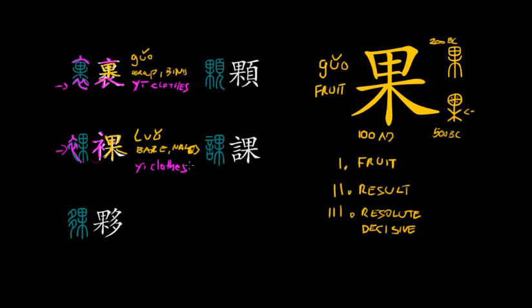This is why it's quite interesting and important to look at seal script versions: in the seal script the 衣 cloth character is almost untouched — it's separated, but has the exact same form — whereas in the modern regular script, you would never imagine it's the same character. Anyway, 裸 (luǒ) means bare and naked, with clothes as the semantic element. You can find it in words like 裸体 (luǒtǐ), which means naked — not to confuse with 楼梯 (lóutī), which is staircase.